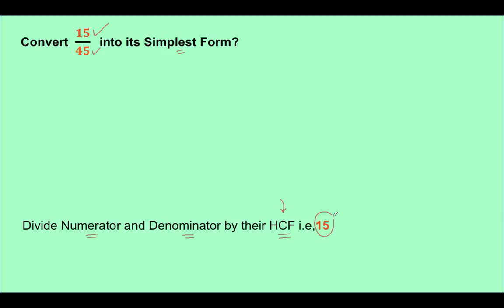The HCF is actually 15, but how do we get 15? Let's see. I divide 15 by 3 and get 5. Then I divide this by 5 and get 1. Similarly, if I divide 45 by 5, I get 9. If I divide 9 by 3, I get 3, and if I divide 3 by 3, I get 1.